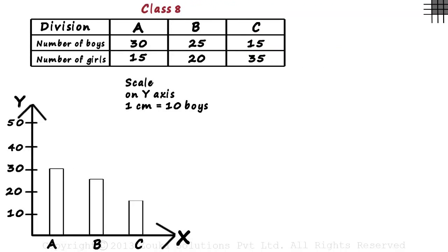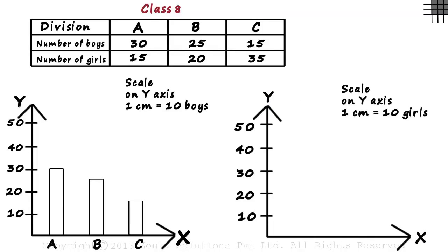Now let's draw the bar graph for the number of girls in each of the divisions. We choose the same scale for the y axis and write A, B and C on the x axis. To represent the number of girls, let us use shaded bars.